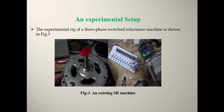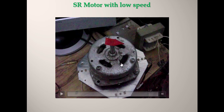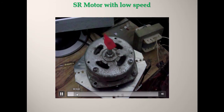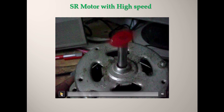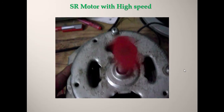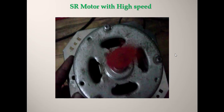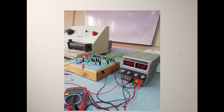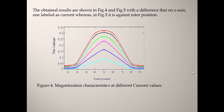For the experimental setup, a three-phase machine was designed with six poles on the stator and four poles on the rotor. The experimental rig of the three-phase switch reluctance machine is shown in figure number three. Here you can see the existing SR motor running at low speed, and now the SR motor running at high speed. This is the inside view of the four-pole SR motor, showing the poles on the stator and rotor. The experimental board shows the machine connected through its drive circuit.